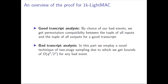For good transcript analysis, we choose our bad events such that we get permutation compatibility between the tuple of all inputs and the tuple of all outputs for a good transcript — where 'all inputs' means all initial and final inputs. Permutation compatibility between two tuples means there is a permutation which, when applied on the first tuple, gives the second tuple. In bad transcript analysis, we employ a novel technique called reset sampling, which gives bounds of order q² / 2^n for any bad event.